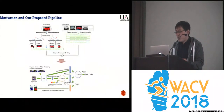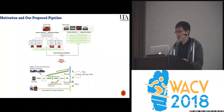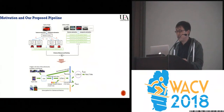In our work, given a query vehicle image and a set of gallery images, the essential task is to generate a global viewpoint-invariant representation for each vehicle, which can be considered as a descriptive feature containing all view information. Then we can fuse all the inferred features in different views.